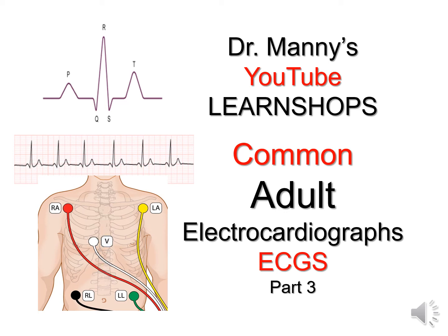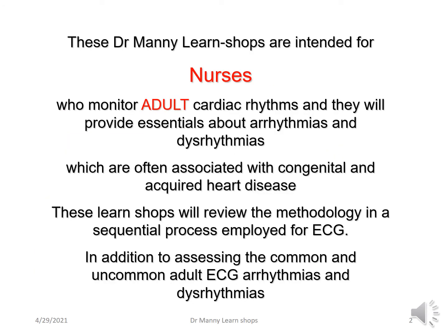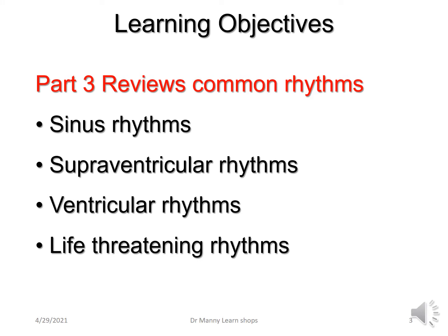Hi everybody, welcome to part 3 of common adult electrocardiographs. As mentioned previously, this learn shop is for all nurses and healthcare providers who monitor adult cardiac rhythms. It will provide you with a sequential methodology when attempting to look at and interpret common and uncommon adult ECG arrhythmias and dysrhythmias. The learning objectives for this session are to review common rhythms such as normal sinus rhythm, supraventricular and atrial dysrhythmias, ventricular rhythms and life-threatening rhythms, which are more common in adults.